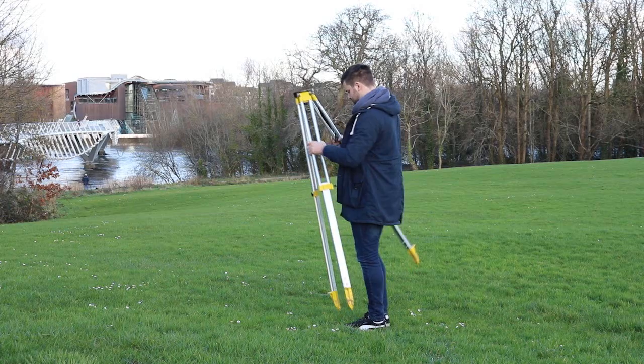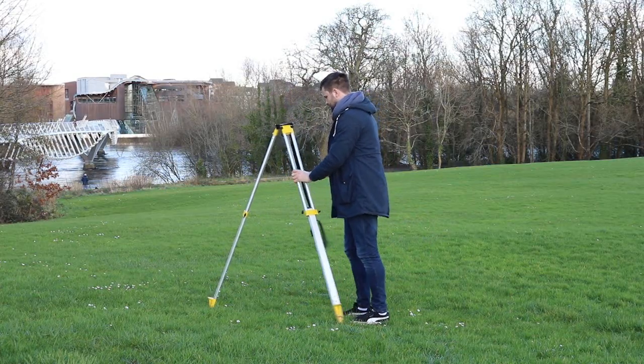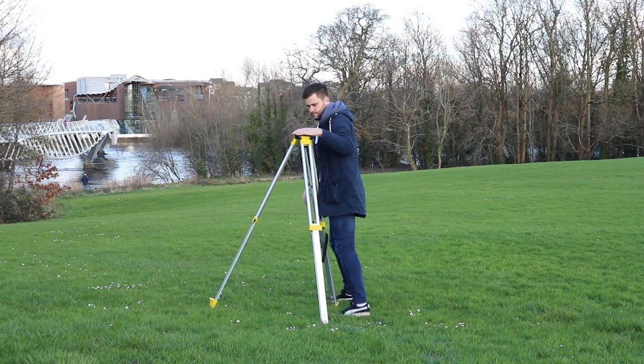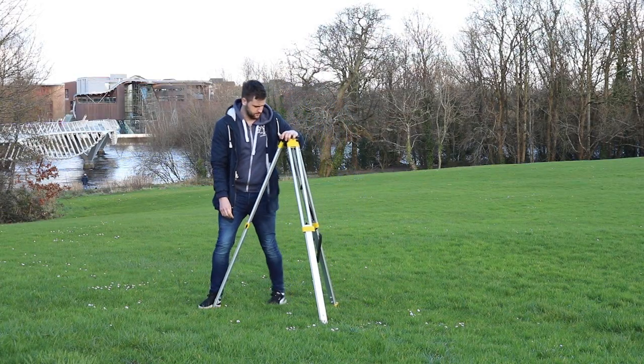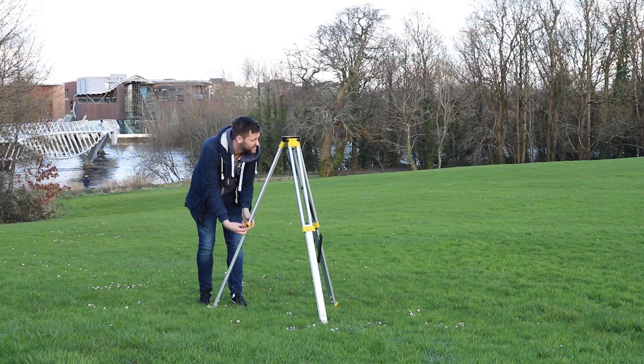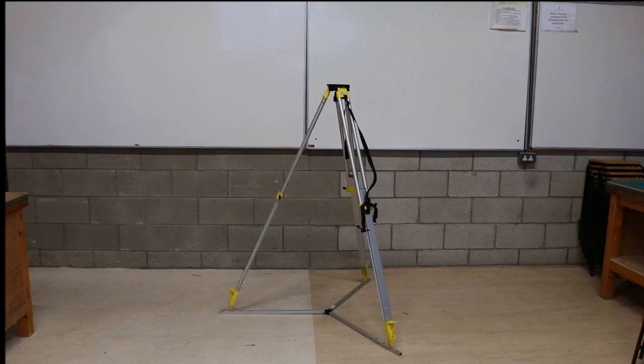If on soft ground, stand on the legs to push them into the ground to ensure the legs are stable. The stability of the legs is very important because even the smallest movement in the legs can cause errors in the setting out of your points later on. If the surface you are setting up on doesn't have the grip required to hold the legs or you don't want to damage the surface, a tripod star should be used as in this scene.